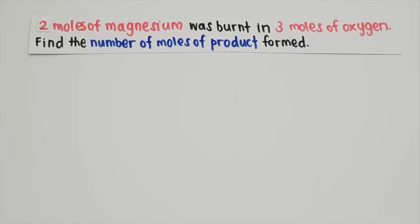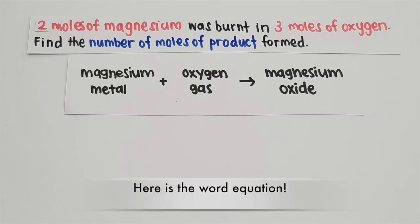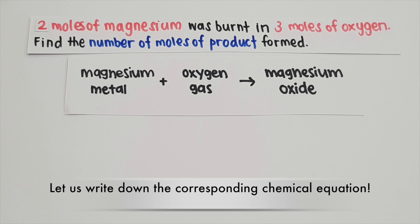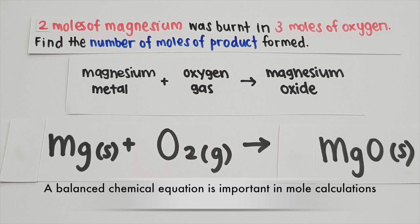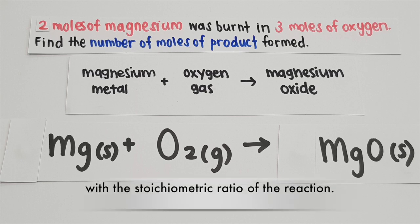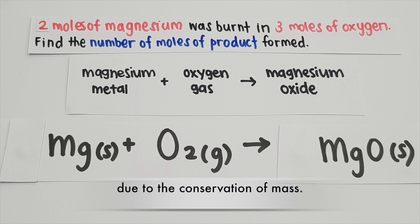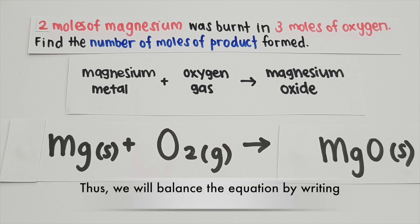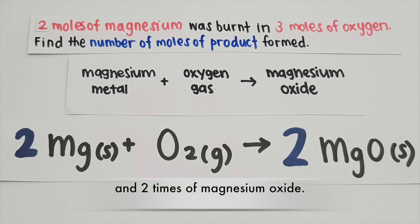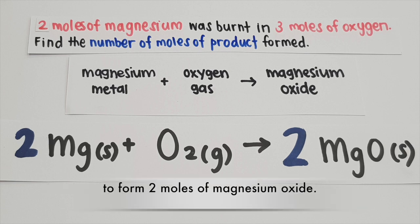Two moles of magnesium was burnt in three moles of oxygen. Find the number of moles of product formed. We have learnt that when magnesium burns in oxygen, magnesium oxide is formed. Here is the word equation: magnesium metal plus oxygen gas gives you magnesium oxide. A balanced chemical equation is important in mole calculations, as we often need to compare the actual molar ratio with the stoichiometric ratio of the reaction. We balance the equation by writing two times magnesium and two times magnesium oxide. In this reaction, two moles of magnesium react with one mole of oxygen molecules to form two moles of magnesium oxide.